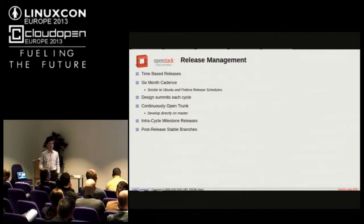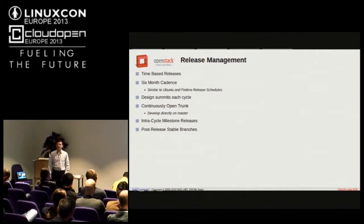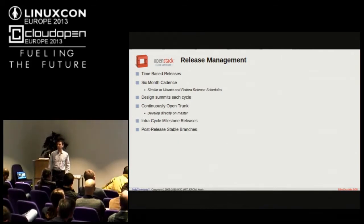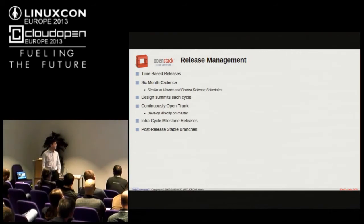Finally, after a release, they're not perfect — they're supposed to be, but they're not. So we have stable branches that we fork off and maintain for a period of time with security and bug fix updates.